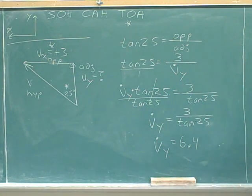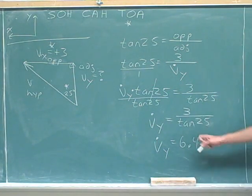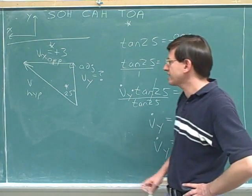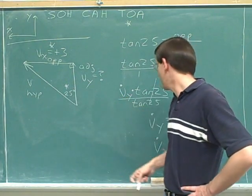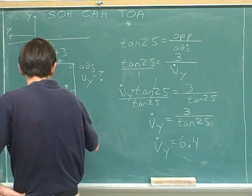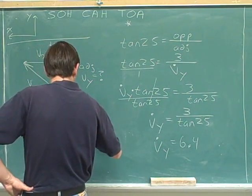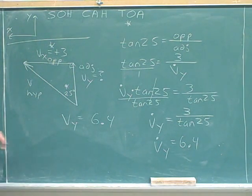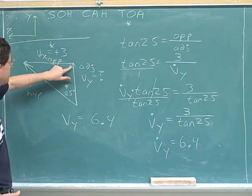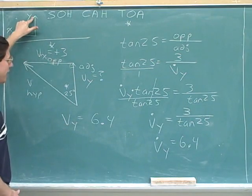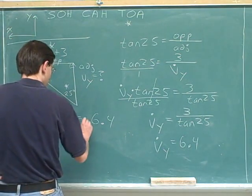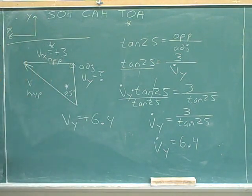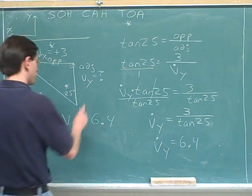So v_y magnitude is 6.4. Now, we're not done yet because the question was not asking for the magnitude. It was asking for the signed component without the dot. So let's work that out. We know the magnitude is 6.4. Now, what about the sign? Well, we can see that this y component is pointing up. Pointing up. And up is our positive direction. So the answer is that v_y is positive 6.4.